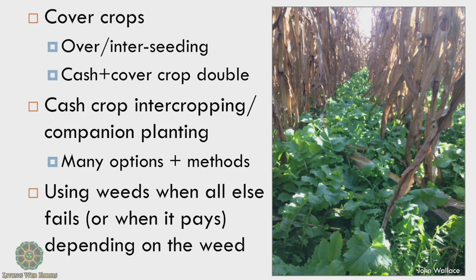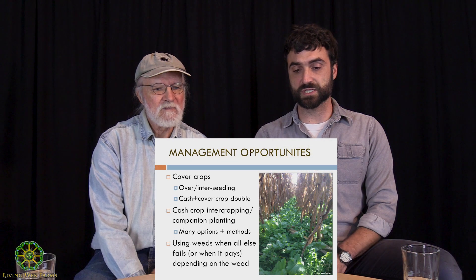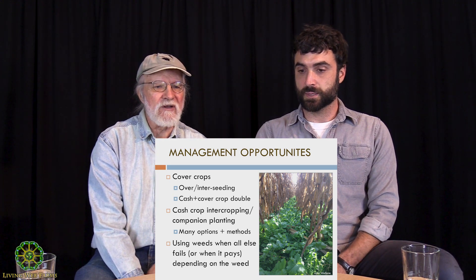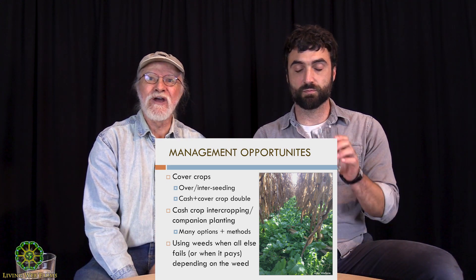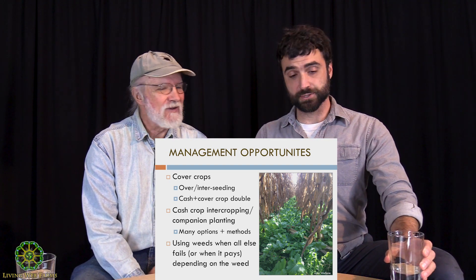Category two would be planting different cash crops in the same space at the same time, for which there are many options and methods. Then finally, maybe use weeds when all else fails — or when it pays to use them, depending on the weed, because things can get out of control quickly. Don't always think of weeds as an inherent problem; they can be a patch over the ground when you don't have time to deal with them, so long as you don't let them go to seed. Some weeds can fetch a price at the market and are actually more nutritious than crops by a significant factor.